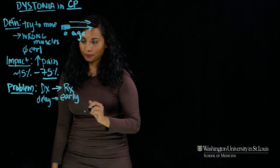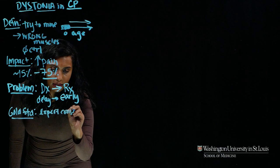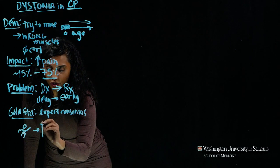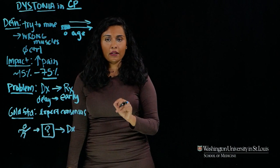The current gold standard for dystonia diagnosis is expert consensus. What that means is that a group of experts in dystonia will evaluate a person moving either directly or by video, have a discussion about them, and then out comes a diagnosis — either this person has dystonia or this person does not have dystonia. But the question remains: what are the specific movement features that a person might display that might prompt an expert to diagnose dystonia?